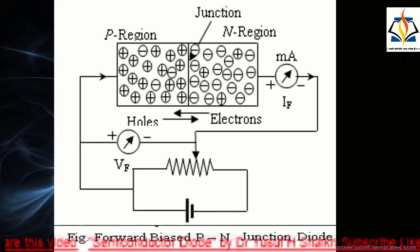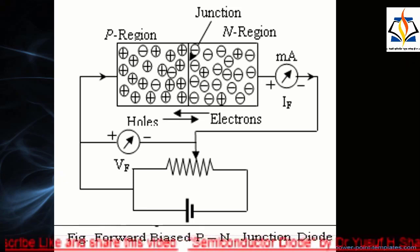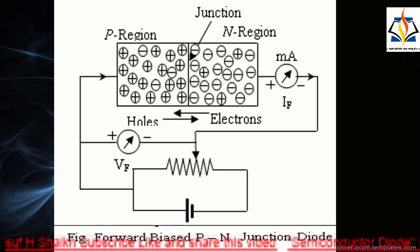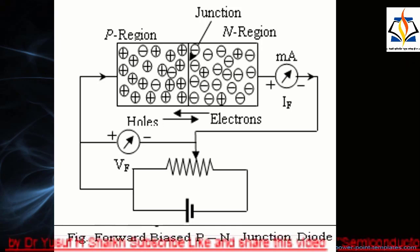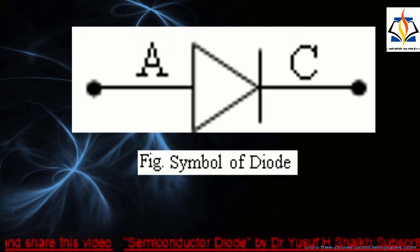Because of the forward potential difference, majority charge carriers flow across the junction in opposite directions. The current that flows due to majority carriers is called the forward current, which consists of both electron current and hole current flowing in opposite directions. If the applied forward potential is less than the barrier potential, no current flows. The forward current flows only when the applied potential is equal to or greater than the barrier potential, and increases rapidly with increasing forward potential.